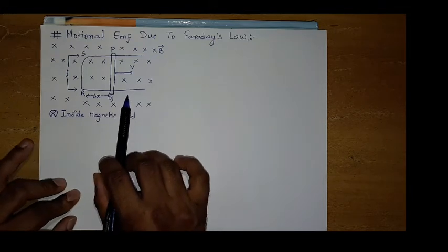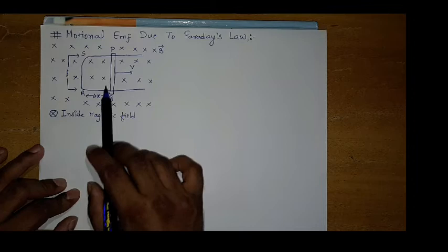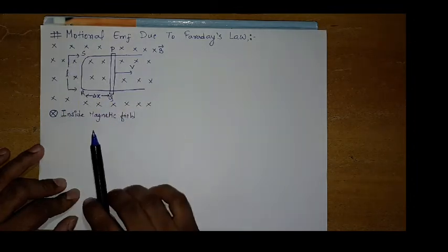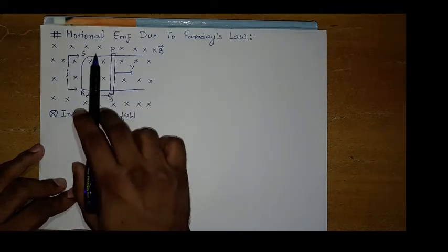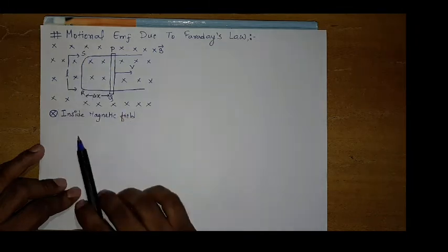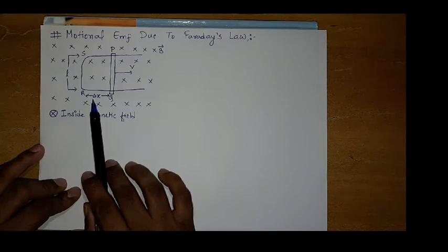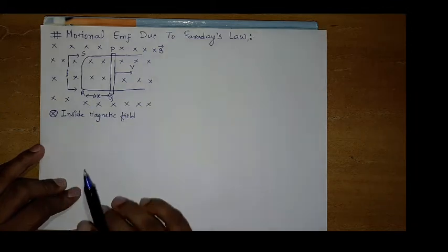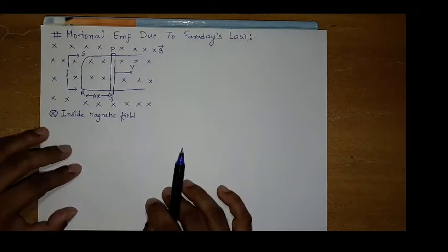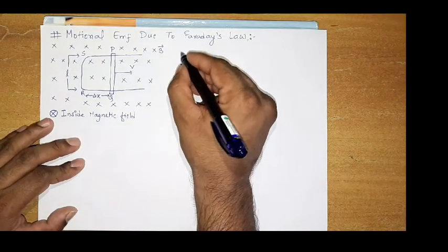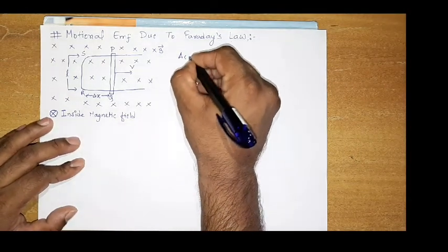Then here we have a square loop called PQRS. For induced EMF, this enclosed area is responsible. We have to see length L and increase in width delta x. We have to see Faraday's law.